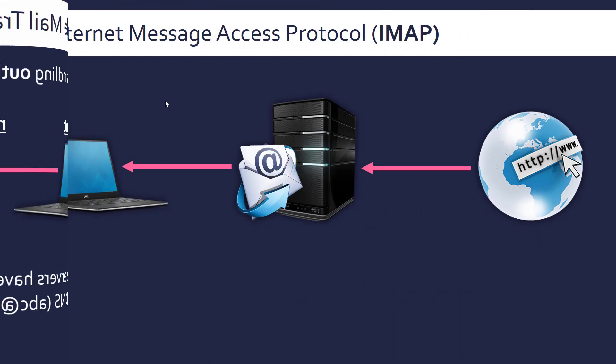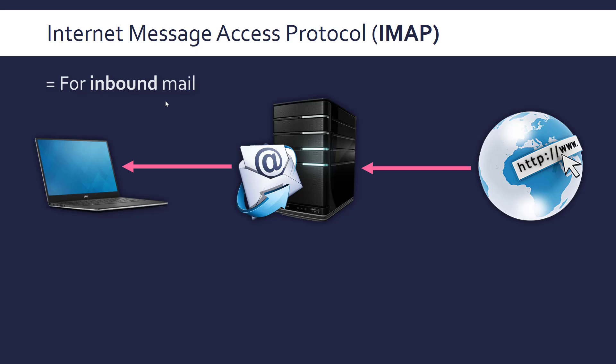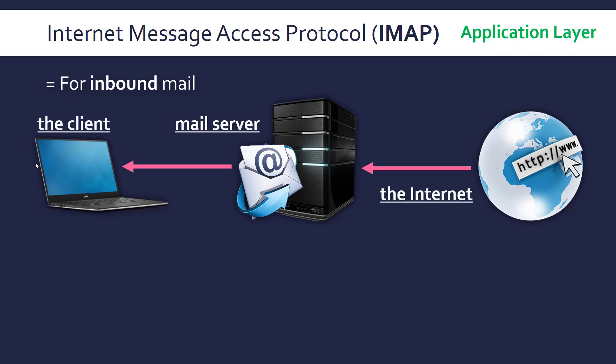Looking now at an inbound mail protocol, we have IMAP, which stands for Internet Message Access Protocol. This works again in the application layer, so in this case we've got mail coming from the internet to our email client via a mail server.